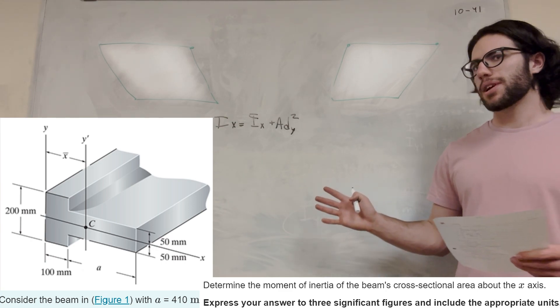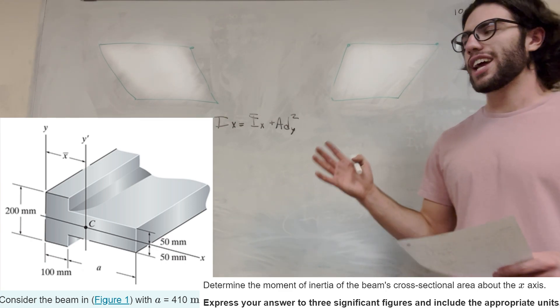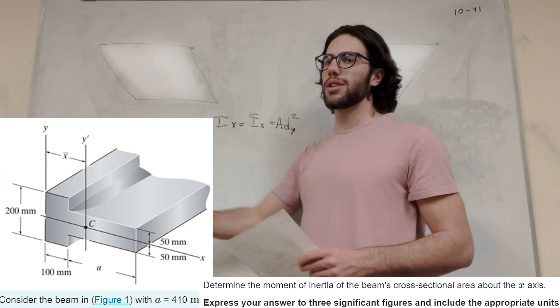What's up, Cal gang? Alright, so we got the statics problem here. We're trying to find the moment of inertia around the x-axis, and in our problem A equals 410. So let's get started.